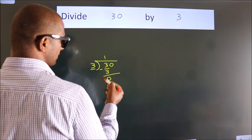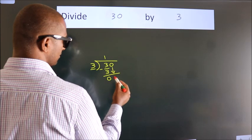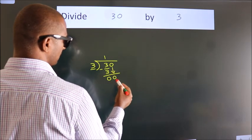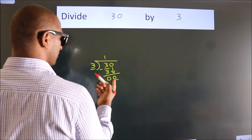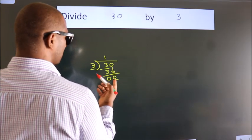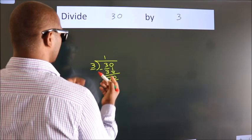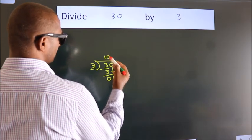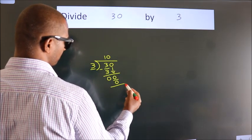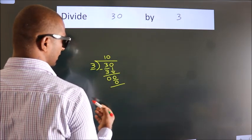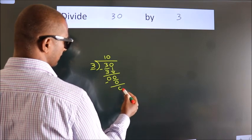After this, bring down the beside number. So, bring down the 0 — we have 0. When do we get 0 in the 3 times table? 3 times 0 is 0. Now we subtract, and we get 0.